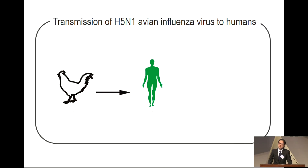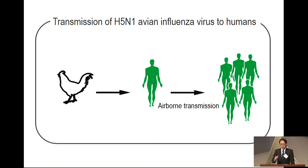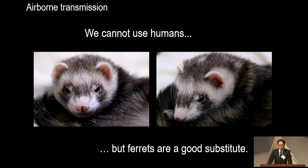Humans get infected with H5N1 virus sporadically from bird species, but human-to-human transmission has been limited. If airborne transmission occurs, then this virus may cause a pandemic. So it is important for us to understand airborne transmissibility of viruses in non-human animals to examine pandemic potential. We can't use humans, so we use ferrets for this purpose, because when ferrets are infected with human influenza viruses, they show symptoms like humans — high fever, runny nose, sneezing.